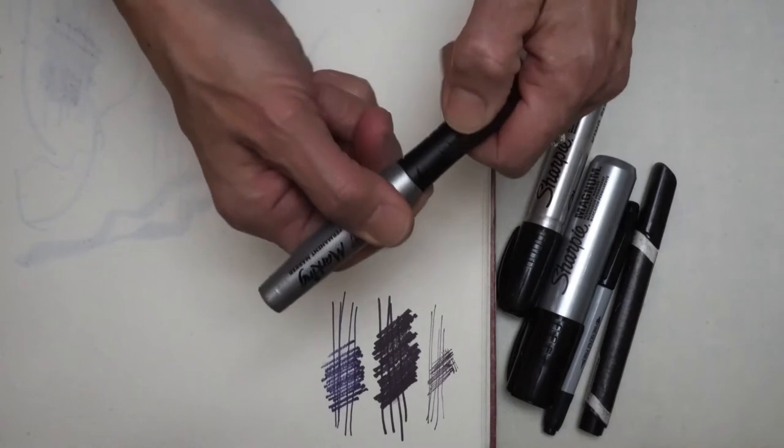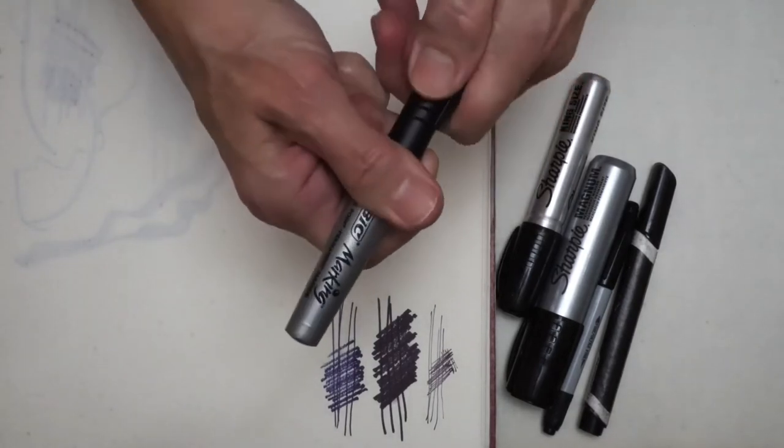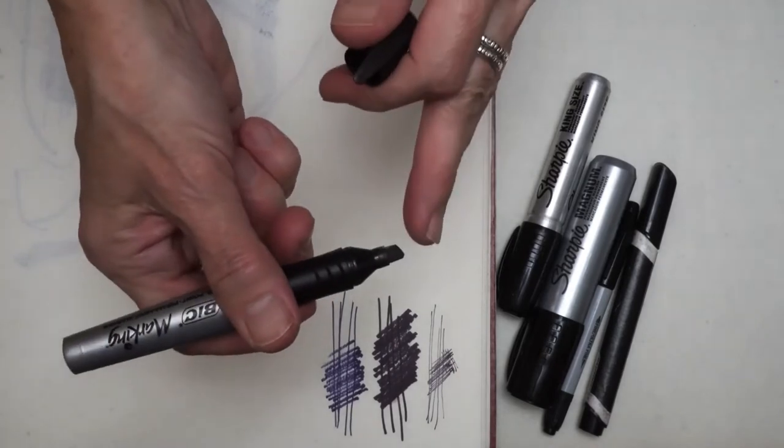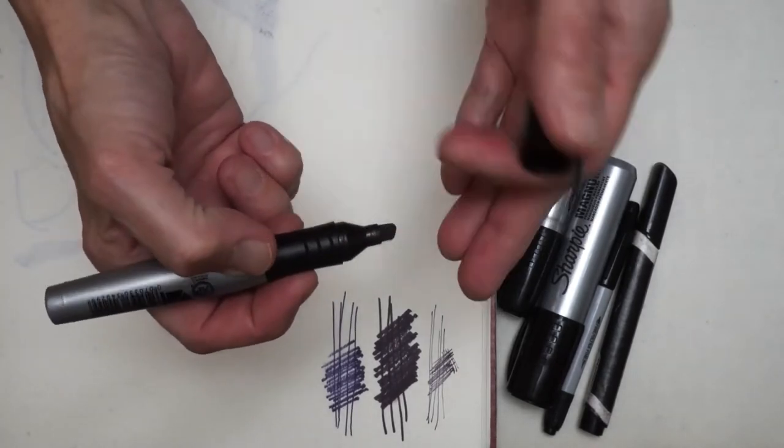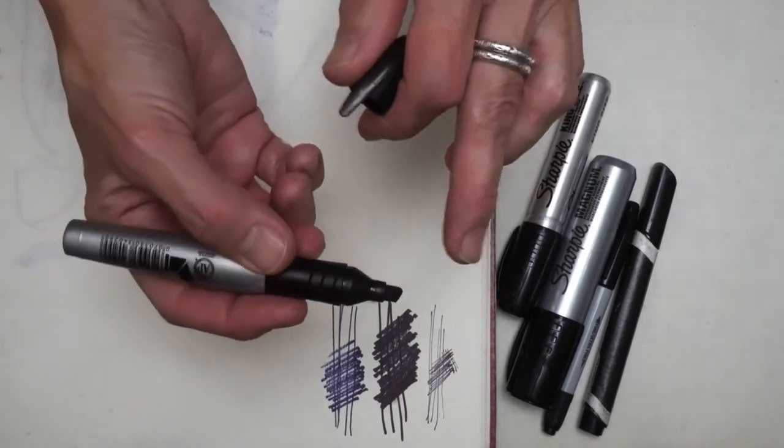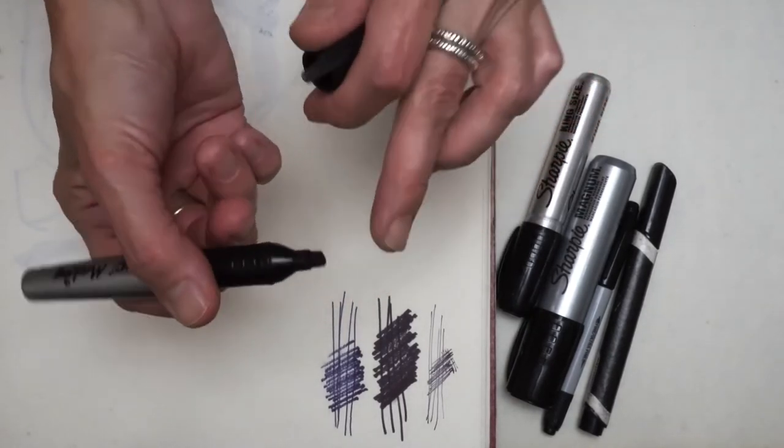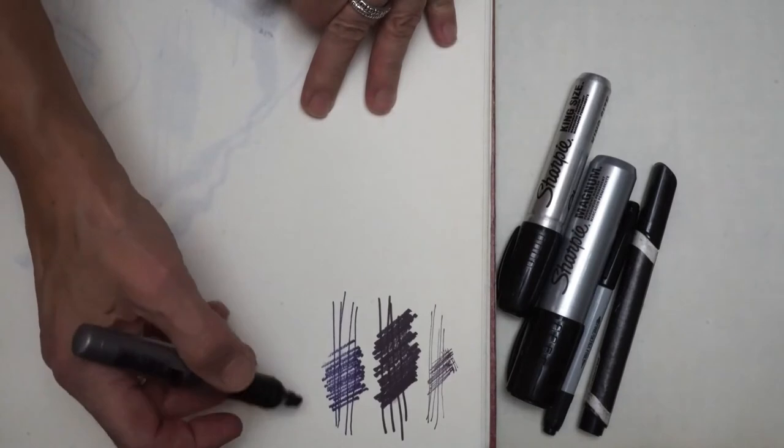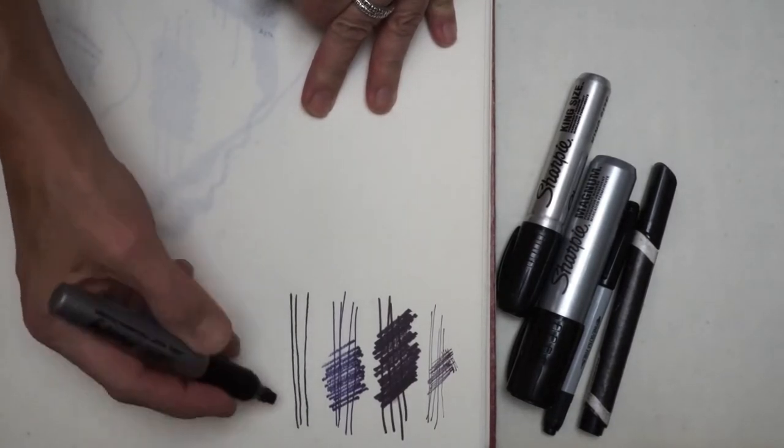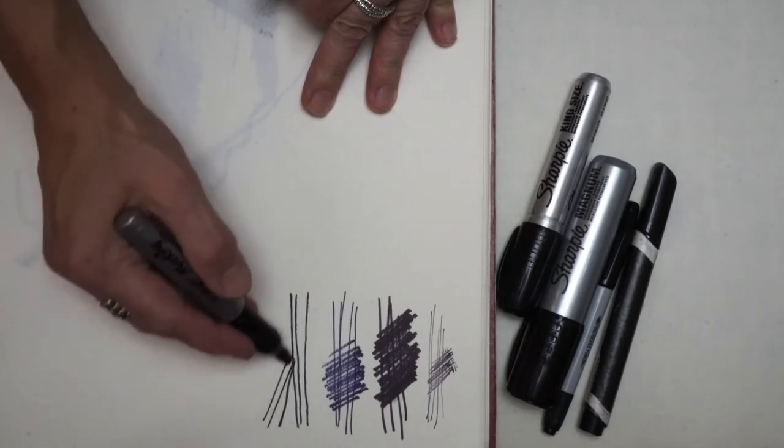You'll also notice that I put the covers back on my markers all the time. It extends their life, keeps them from drying out. This next one is the first of our three chisel tips. The chisel tip has an angled tip, the felt is exposed all the way around, so it's easy to use different parts of the tip including the point, the sides, and then the flat end.